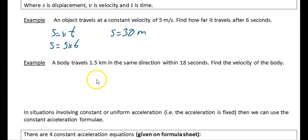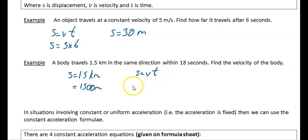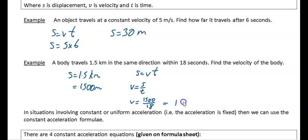The next example: a body travels 1.5 kilometers in the same direction in 18 seconds — find the velocity. First, convert 1.5 km to 1,500 meters. Then from s = vt, rearrange to v = s/t, so v = 1500 ÷ 18 = 83.3 meters per second.